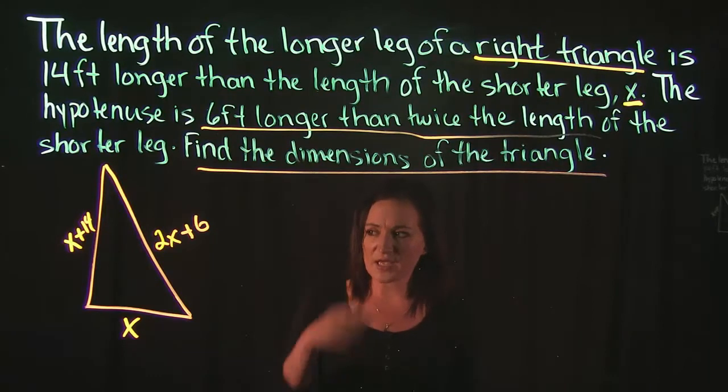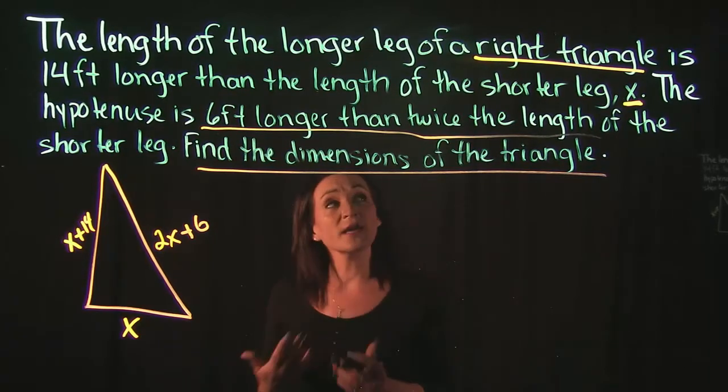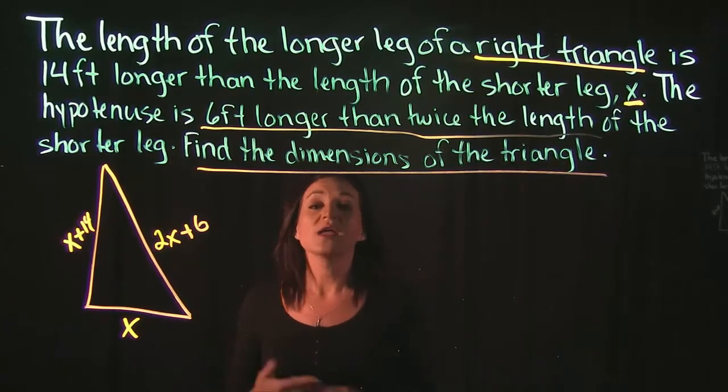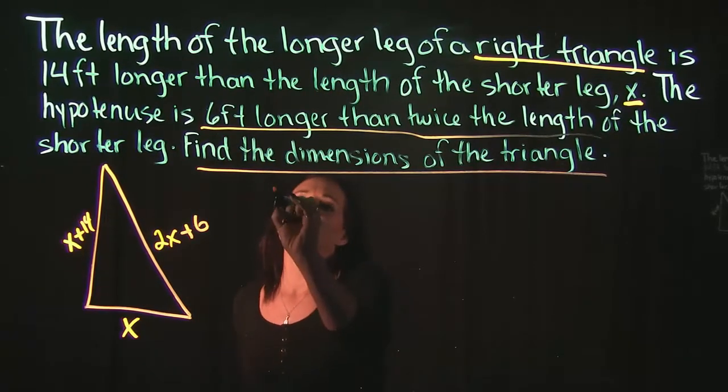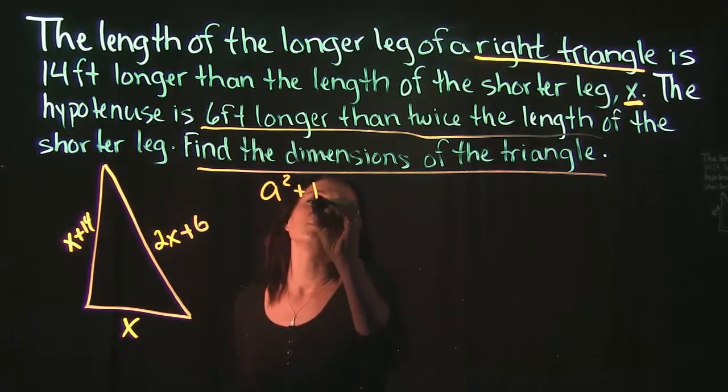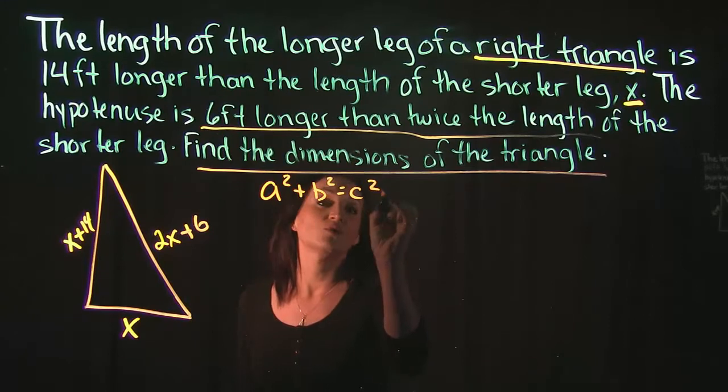The only formula that I can think of to use since we're talking about a right triangle is Pythagorean's theorem. Pythagorean's theorem reads a squared plus b squared is equal to c squared.